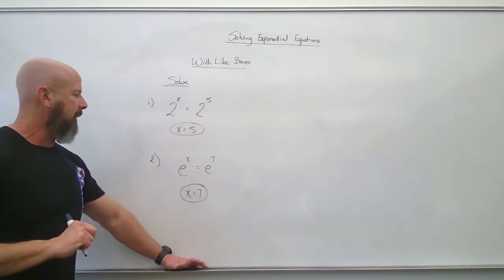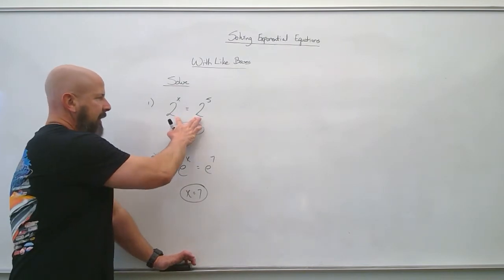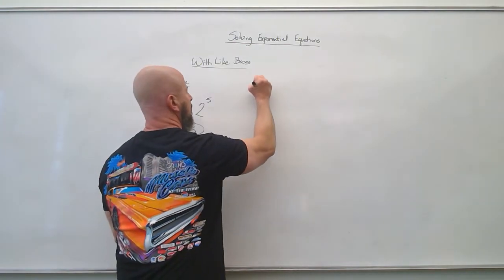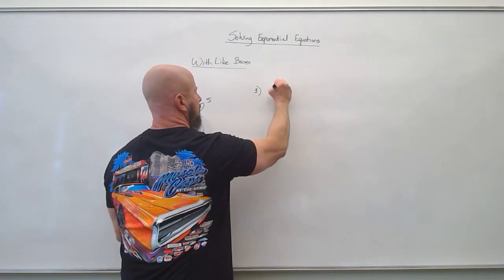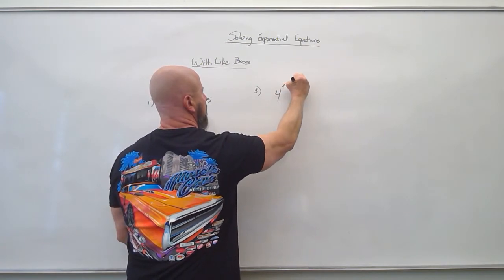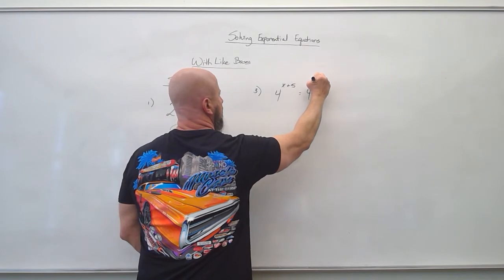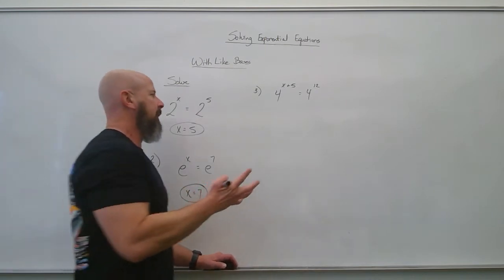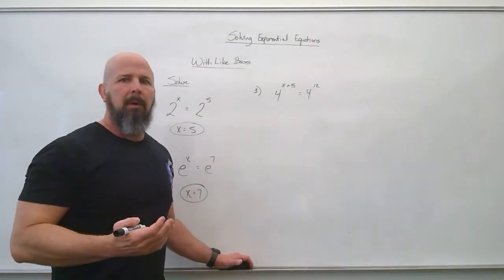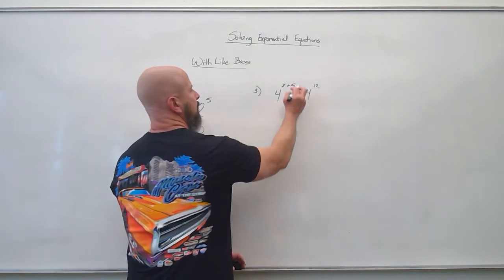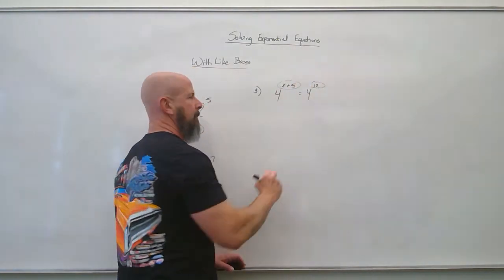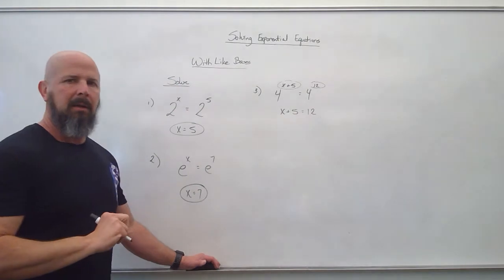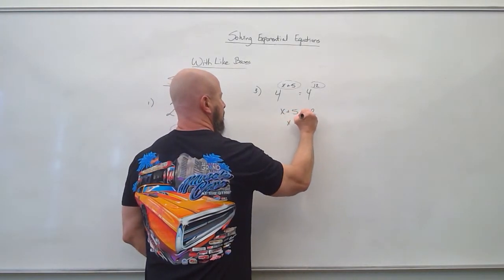Let's step this up. We need these bases to be the same; if they're the same, I can go right to comparing the exponents. Let's go 4 to the x plus 5 equals 4 to the twelfth. I notice the same base — 4. So x plus 5 has to equal 12, which means x equals 7.